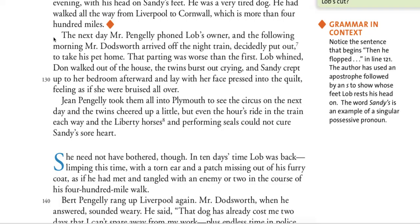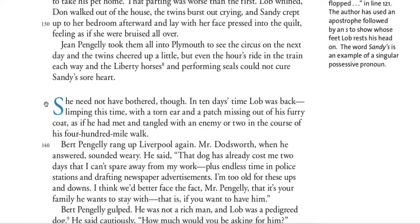The next day, Mr. Pingeli phoned Lob's owner. On the following morning, Mr. Doddsworth arrived off the night train, decidedly put out — meaning he was upset — to take his pet home. That parting was worse than the first. Lob whined. Don walked out of the house. The twins burst out crying, and Sandy crept up to her bedroom and lay with her face pressed into the quilt, feeling as if she were bruised all over. Jean Pingeli took them all into Plymouth to see the circus on the next day, but even the hours' ride in the train and the Liberty horses and performing seals could not cure Sandy's sore heart. She need not have bothered, though. In ten days' time, Lob was back — limping this time with a torn ear and a patch missing out of his furry coat, as if he had met and tangled with an enemy or two in the course of his 400-mile walk.